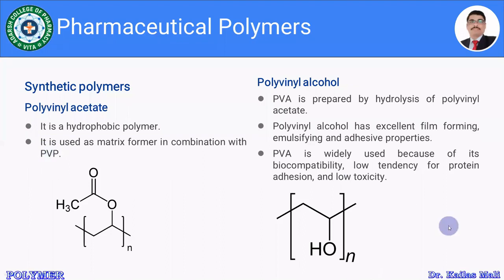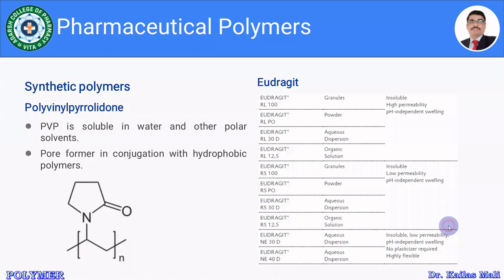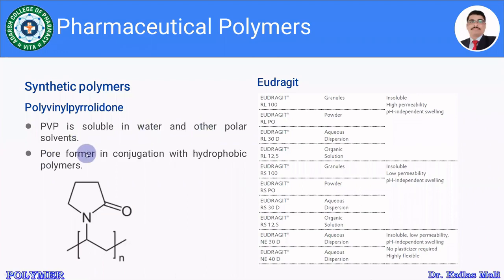Polyvinyl pyrrolidone (PVP) is a hydrophilic polymer. It is soluble in water and in polar solvents. It acts as a pore former, as already discussed, and is widely used in conjunction with hydrophobic polymers.